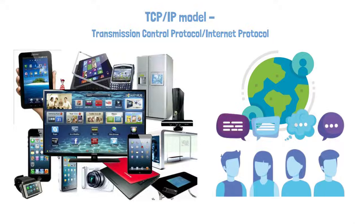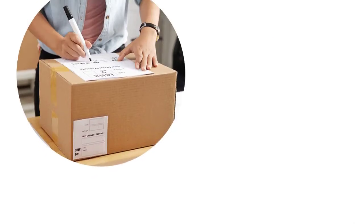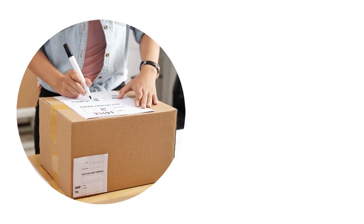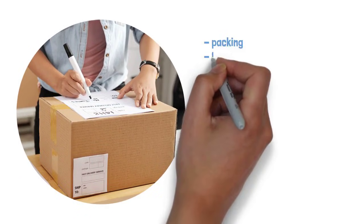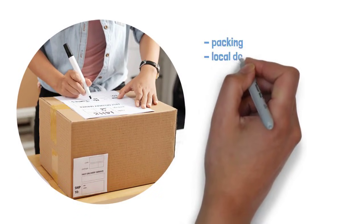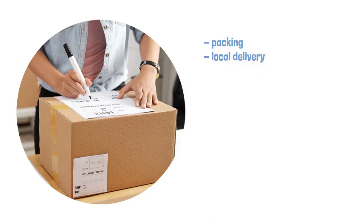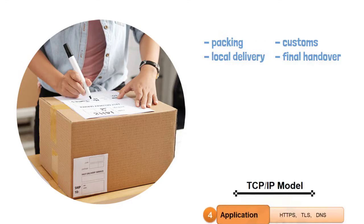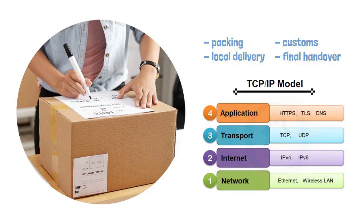Now, imagine sending a parcel from your home to a friend living overseas. The journey involves several steps: packing, local delivery, customs, and final handover. The TCP/IP model works in a similar way, organizing network communication into four neat layers.